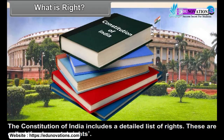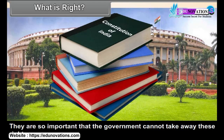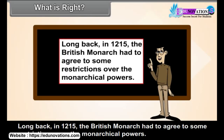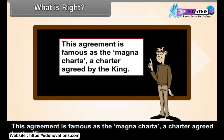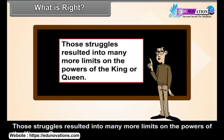The Constitution of India includes a detailed list of rights. These are called fundamental rights, meaning that these rights are of fundamental importance — they are so important that the government cannot take away these rights. Long back in 1215, the British monarch had to agree to some restrictions over the monarchial powers. This agreement is famous as the Magna Carta. Even after this, there were many struggles in England between the people and the monarch. Those struggles resulted in many more limits on the powers of the king or queen.